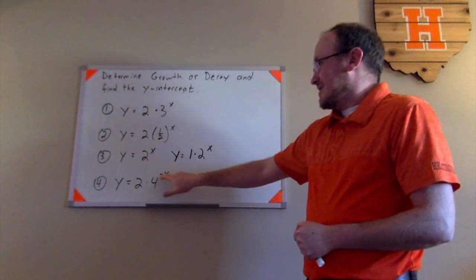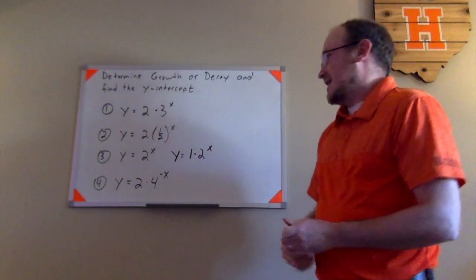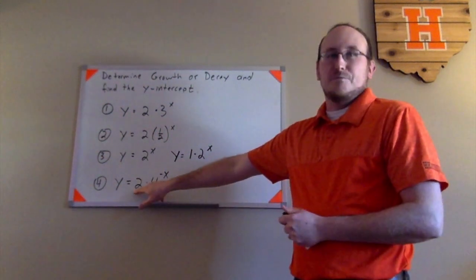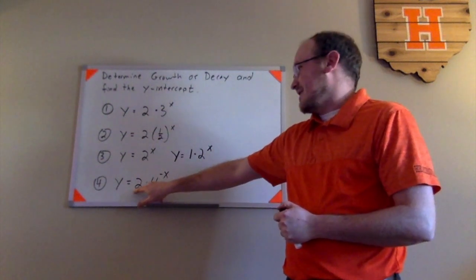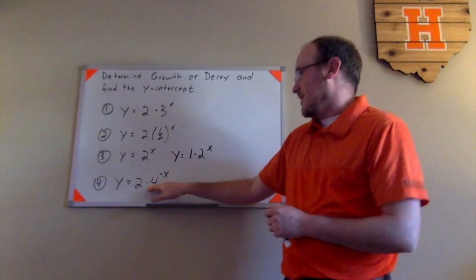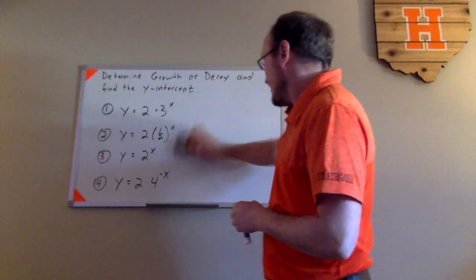Yeah, there's a 4 there, but I was a little bit tricky here by putting a negative on that. The y-intercept, definitely 2. That initial value of 2 there, that's not too difficult to identify. But let's go ahead and talk a little bit more about that as to why this is actually exponential decay and not growth like most people might be inclined to think.